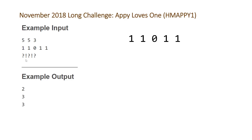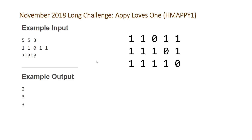The next query is an exclamation mark, so we put the element at the end of the array at the beginning, giving us a new array. The next query is a question mark — the longest sequence of ones is now 3, so we output 3. Then we get another exclamation mark, so we rotate again. We then have a final question mark asking for the longest sequence, but note that it must be less than or equal to k, so we cap the result at k.